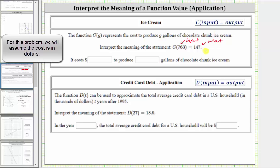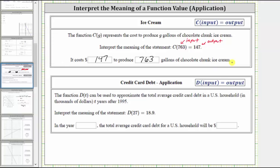And therefore as a complete sentence, we can say it costs $147 to produce 763 gallons of chocolate chunk ice cream. And now let's take a look at a second example that is more involved.